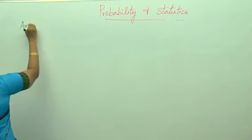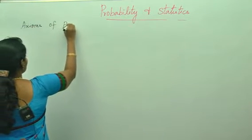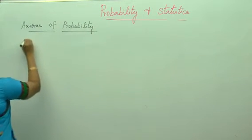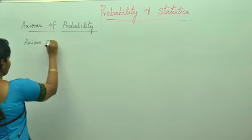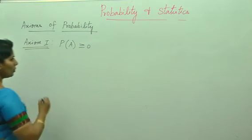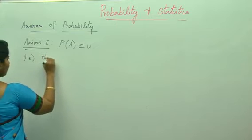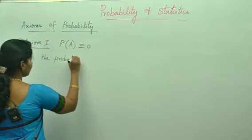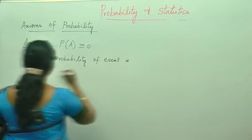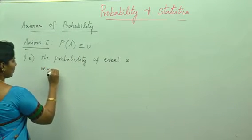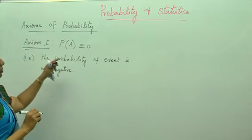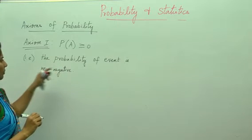First, axioms of probability. Axiom 1: P(A) is greater than or equal to 0. That is, the probability of every event is non-negative. So this is one of the axioms, that P(A) should be greater than or equal to 0, that is the probability of event is non-negative.